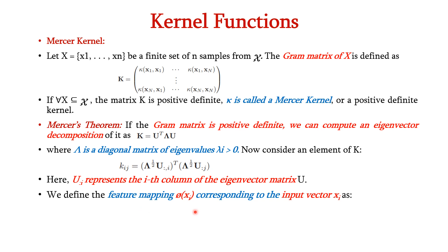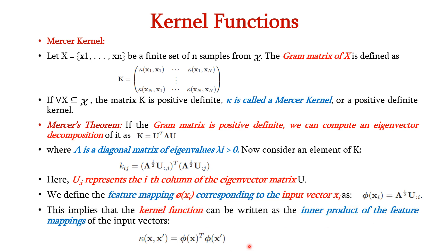We can define the feature mapping pi of Xi corresponding to the input vector Xi as pi of Xi equal to the diagonal matrix of Ui. Based on this, we can rewrite the equation as K of X comma X dash is equal to pi of X transpose into pi of X dash, since pi of X can be written as the diagonal matrix into Ui. This is the modified equation for the Mercer kernel.